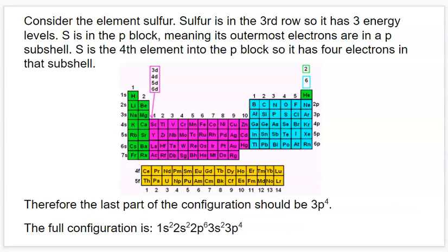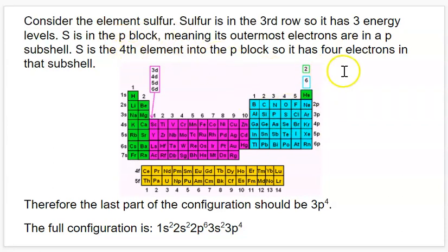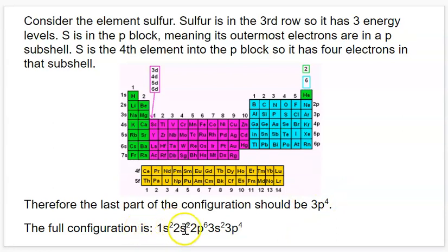Let's consider sulfur. Sulfur is in the third row, so it has three shells. It's in the P block, meaning its outermost electrons are going to be in the P subshell. It's the fourth element into the P block, so it has four electrons in that subshell. So the last part of the electron configuration is going to be 3P4. The full configuration for sulfur is 1S2, 2S2, 2P6, 3S2, 3P4.